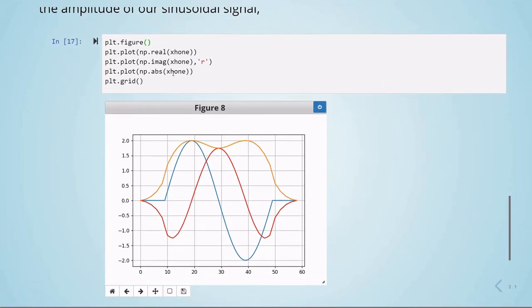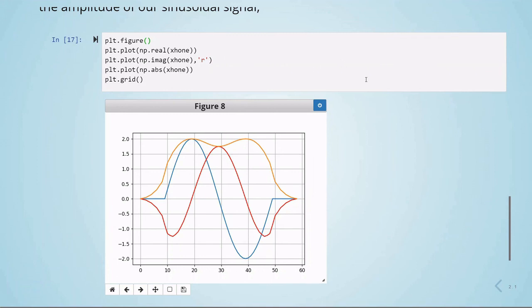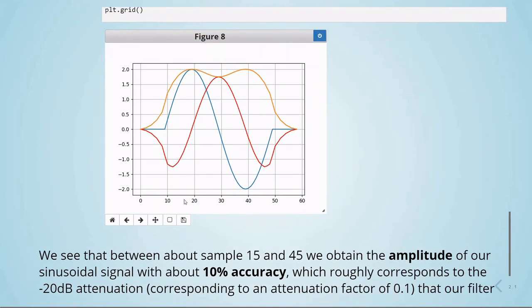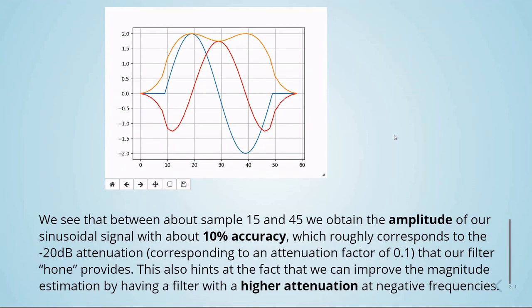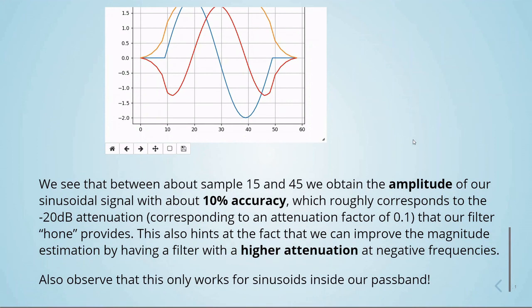Here, ABS of XH1, and we see that about sample 15 and 45, we obtain the amplitude of our sinusoidal signal with about 10% accuracy, which hopefully corresponds to the minus 20 dB attenuation, corresponding to an attenuation factor of 0.1, that our filter H1 provides. This also hints at the fact that we can improve the magnitude estimation by having a filter with a higher attenuation at negative frequencies, but also observe that this only works for sinusoids inside our passband.